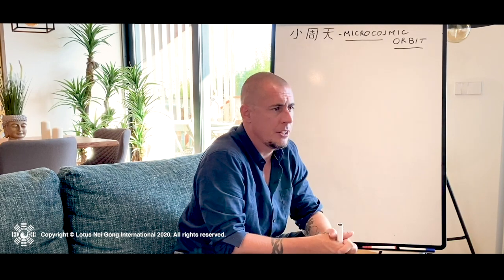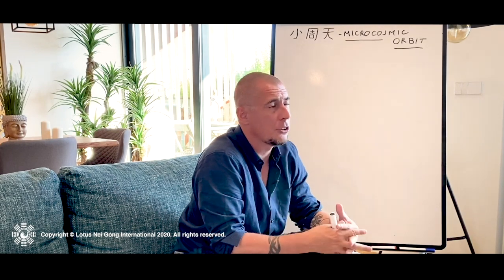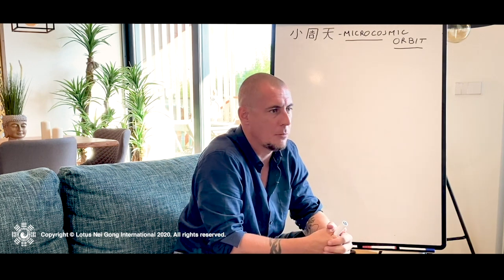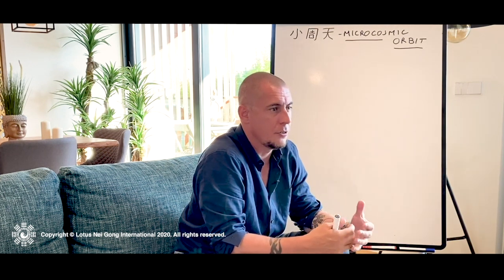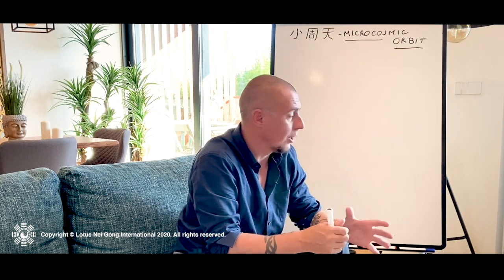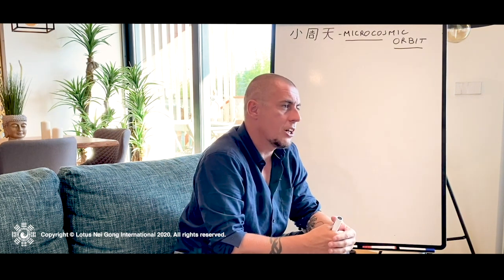Over the course of these lectures and videos, I want to introduce the microcosmic orbit and the theory behind it. There's quite a lot of theory and a lot of methods behind this practice. It's very in-depth, so it's going to take me a little while to instruct the different levels. Initially, I just wanted to introduce what is the Xiaojou Tian, the microcosmic orbit as it's commonly known, and what place does it have in Qigong practice?